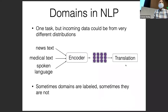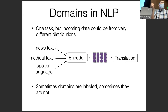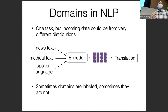One thing to note is that sometimes domains are labeled — you might know the origin of the texts you're getting. For example, if you wanted to create a translation service that translated different websites and users entered the website by copying and pasting the URL, you could infer the domain from the URL and use that as additional information. Alternatively, you might not have domains be labeled — like Google Translate, where people copy and paste random text and Google doesn't know where it came from.